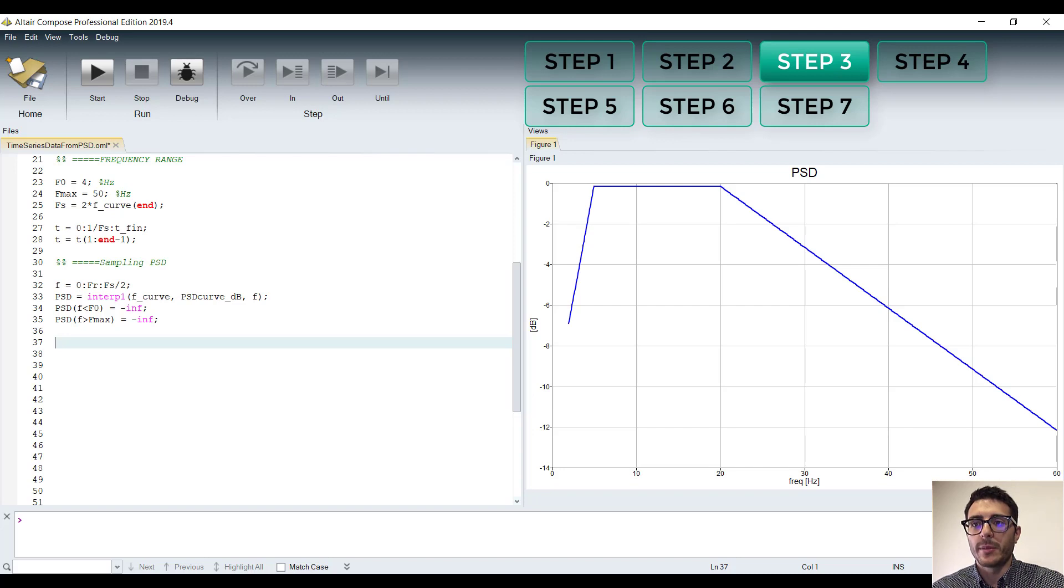We set the PSD values to 0 outside the frequency range. Since we are using dB, this is equal to set to minus infinity. And we can plot it.